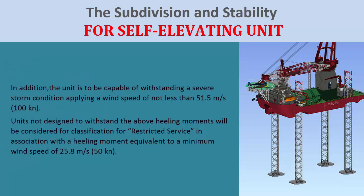In addition, the unit is to be capable of withstanding a severe storm condition, applying the wind speed of not less than 51.5 meters per second (100 knots). Units not designed to withstand the above heeling moments will be considered for classification for restricted service, in association with a heeling moment equivalent to a minimum wind speed of 25.8 meters per second (50 knots).